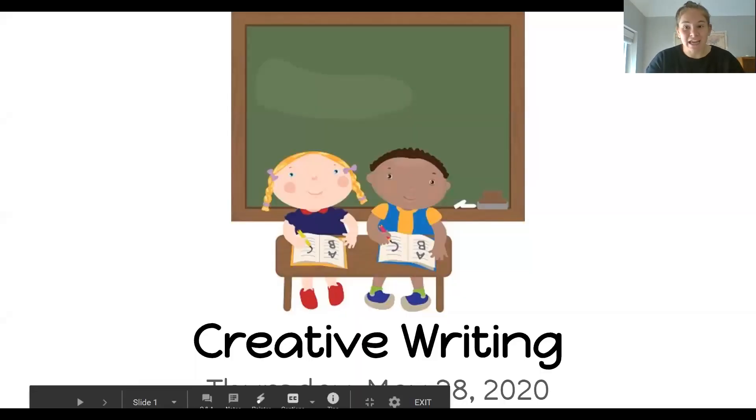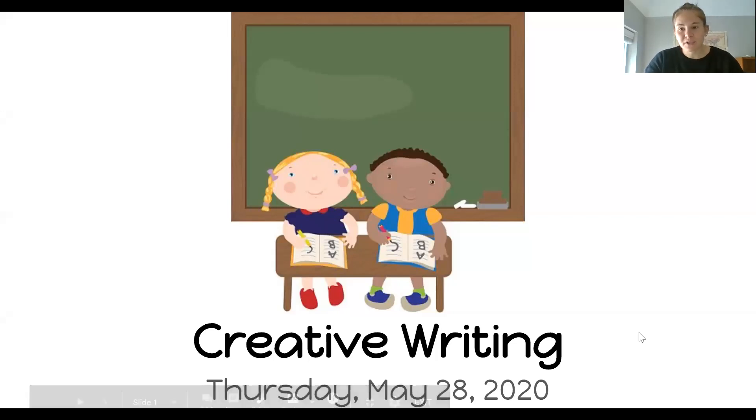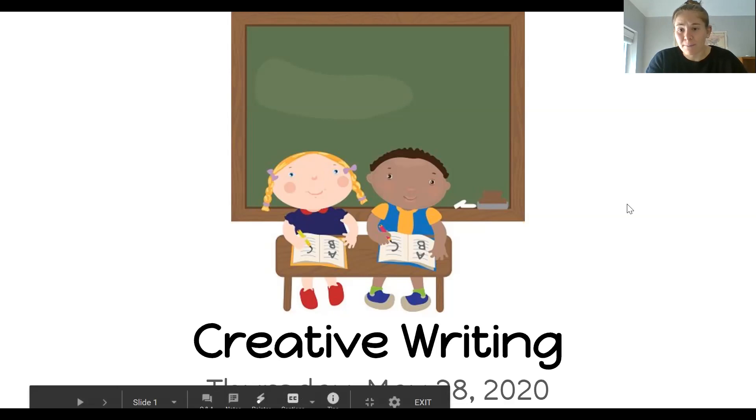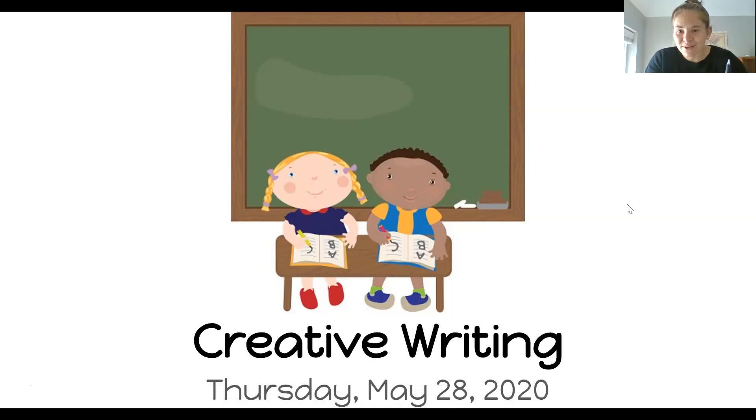So today we're gonna learn about something called creative writing. Now sometimes people use different names to talk about creative writing but basically it's when you make up a story out of your own brain. So creative writing doesn't have to be about something that really happened or even about something that could happen. You could write a creative writing piece about an animal that's not real or about a monster or you could write it about something that could really happen but it hasn't happened to you. So we're gonna watch a quick video to learn a little bit more about creative writing so listen closely and then we're gonna get started trying our own creative writing.